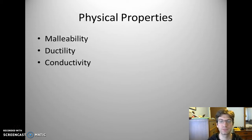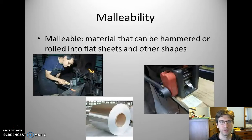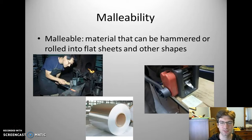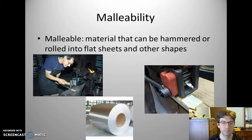Some vocabulary words you need to know are malleability, ductility, and conductivity. Malleability is the ability of a metal or material to be hammered or rolled into sheets or other shapes. Aluminum, for example, gets rolled into sheets such as aluminum foil. But all metals are malleable — you can roll all metals into sheets and hammer them into different shapes.